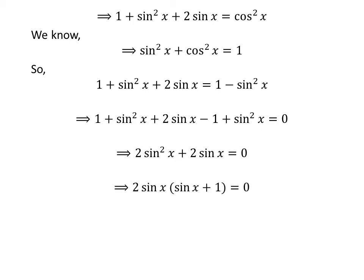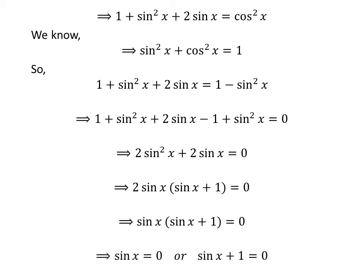Taking out the common factor 2 times sine of x gives us 2 times sine of x times (sine of x plus 1) is equal to 0. Dividing by 2 gives us sine of x times (sine of x plus 1) is equal to 0. This implies that either sine of x is equal to 0, or sine of x plus 1 is equal to 0.